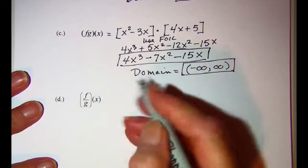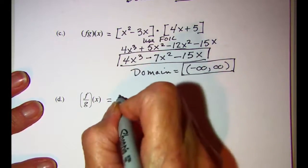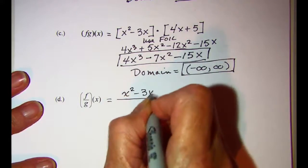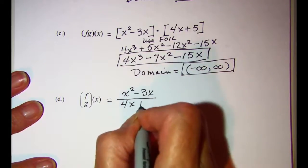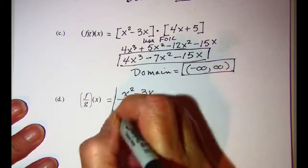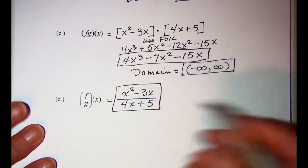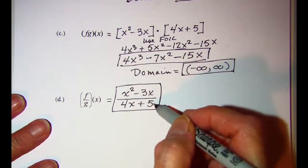For our f divided by g of x, we want our f in the numerator, so x squared minus 3x, and that's divided by 4x plus 5. Now as far as simplifying this expression, there's nothing we can do to make it any more simplified, so this is our quotient.